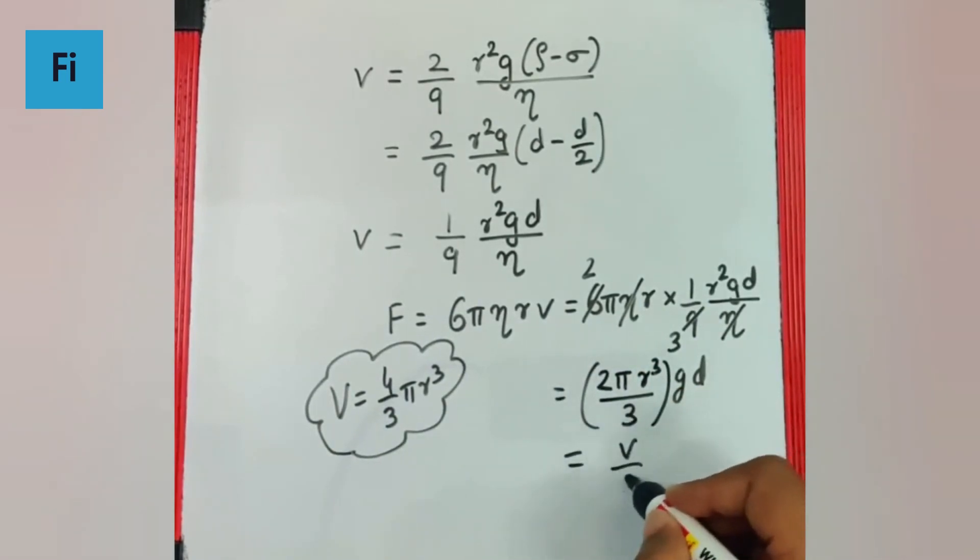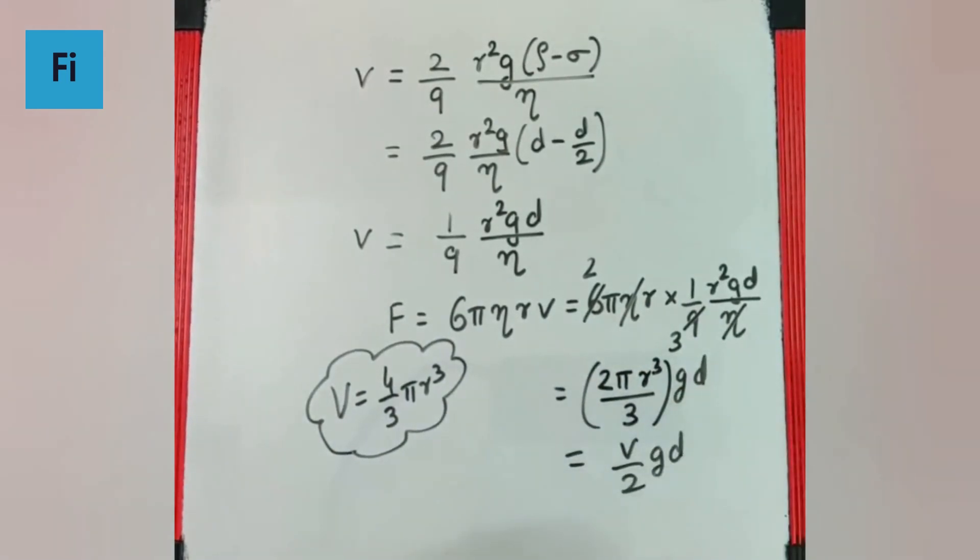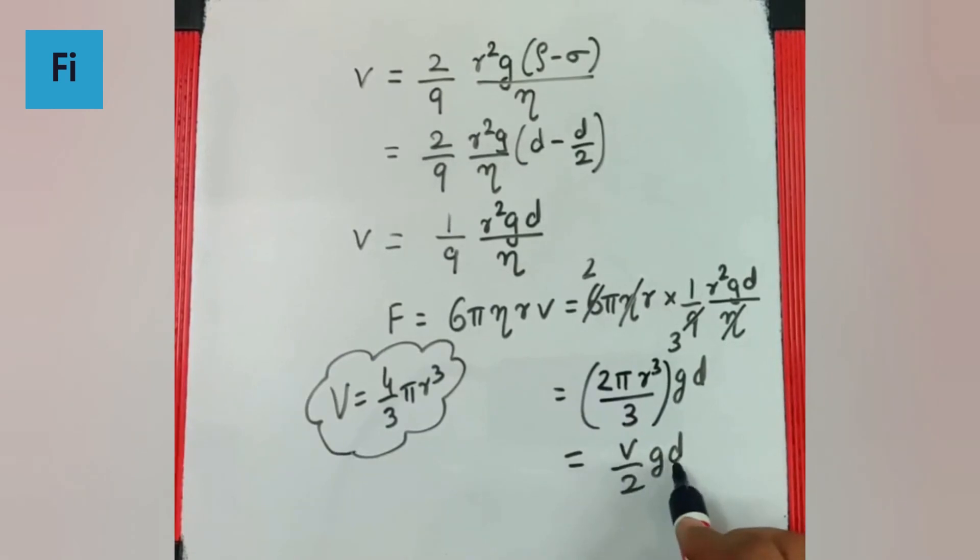So this is nothing but V by 2 G into D, and we also know the volume into density is nothing but the mass, which means this is nothing but M G by 2. And this will be our final answer.